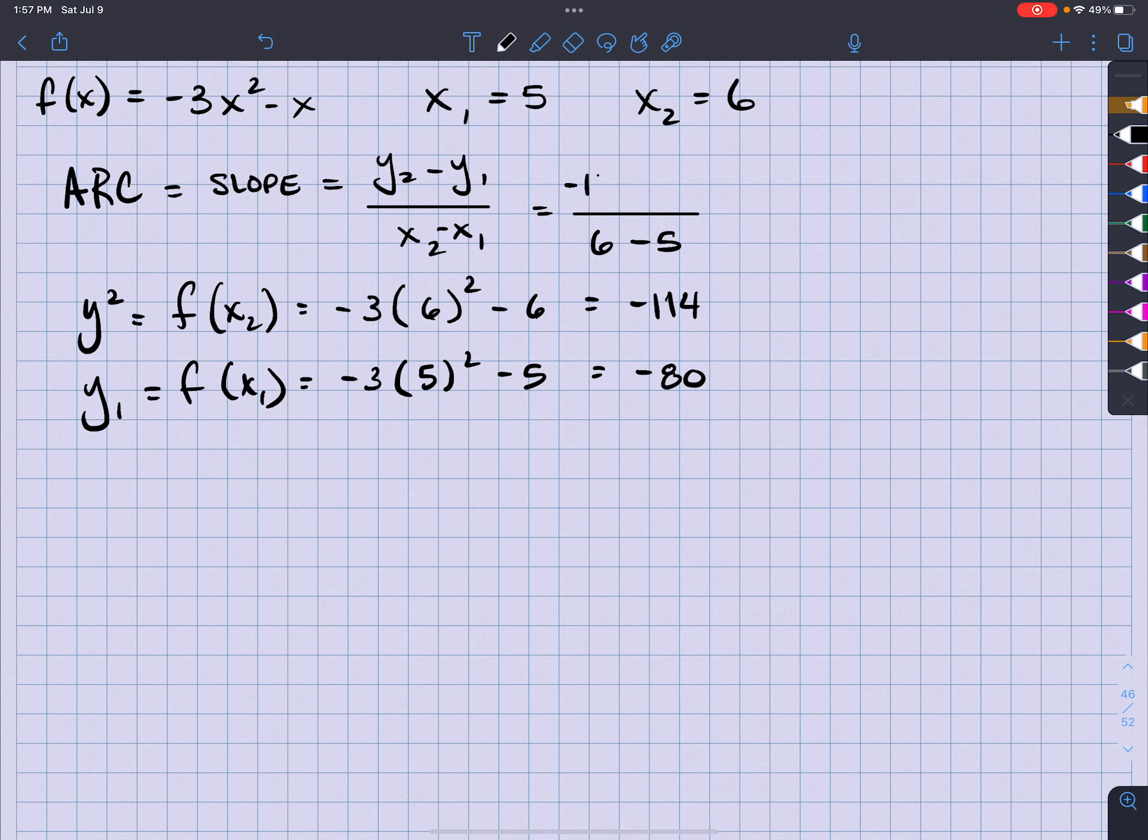So I got negative 114 minus a negative 80. I'm going to get a negative 34, which is choice D. There we go, hope that helps. Any questions, let me know. Later, bye.